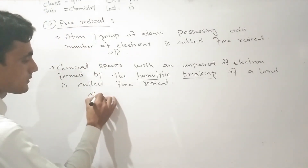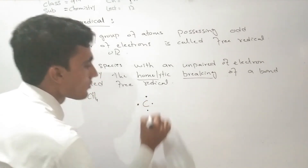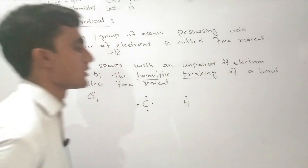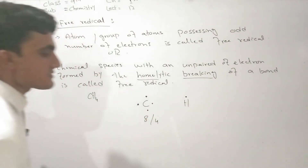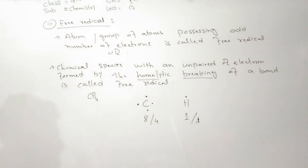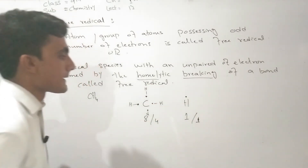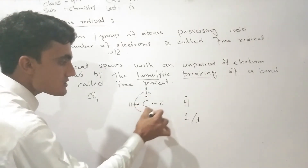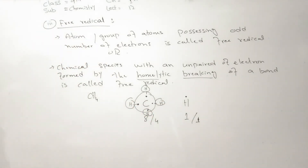For example, CH4. Carbon's outermost shell has four electrons, and hydrogen's outermost shell has one electron. For carbon to become stable, it needs eight electrons, so four electrons are replaced by four hydrogen electrons, making carbon stable. This mutual sharing of electrons is the covalent bond rule of CH4. The two electrons are combined, making them stable.